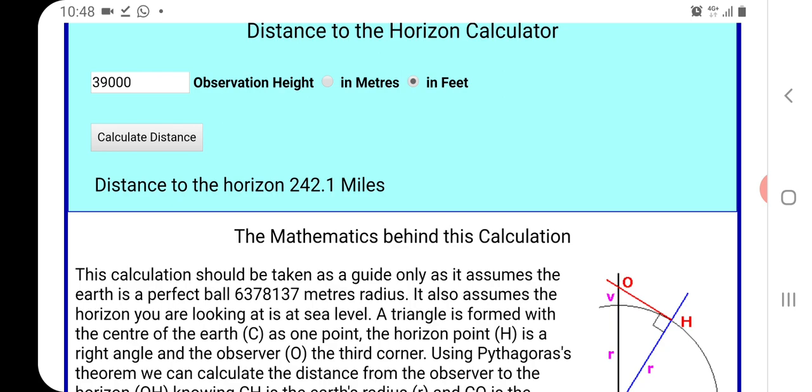So we put in the observation height 39,000 feet and we calculate, and we get a distance to the horizon of 242.1 miles. So we've got that as a reference.